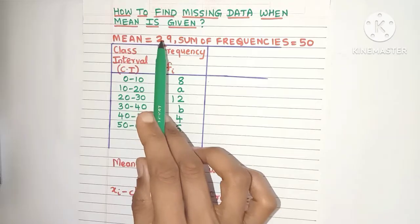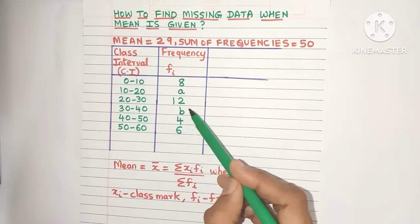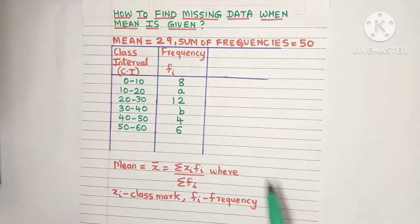Now the mean is given as 29, and the sum of frequencies is 50. We have to find these two missing frequencies A and B. So how do we find that?